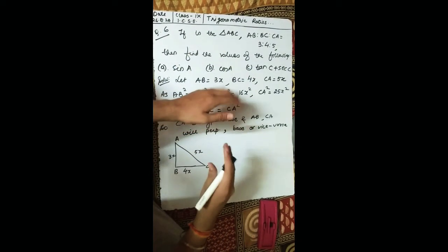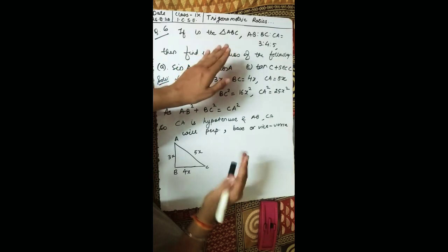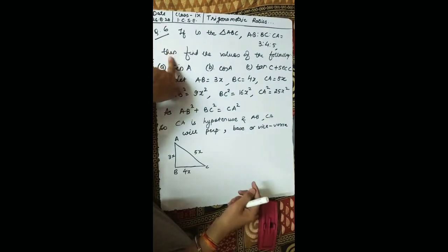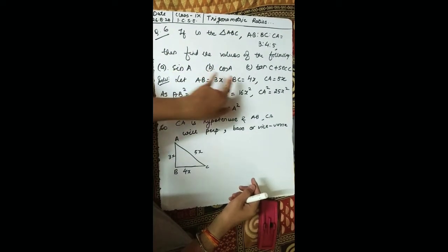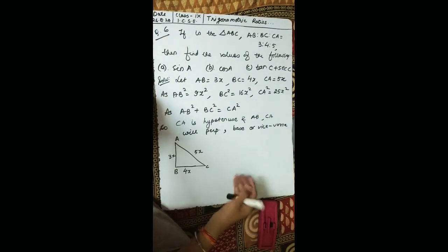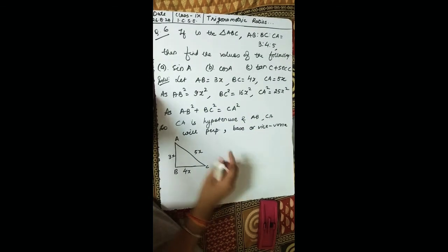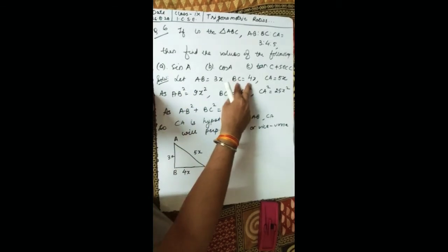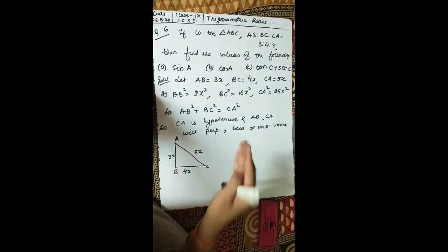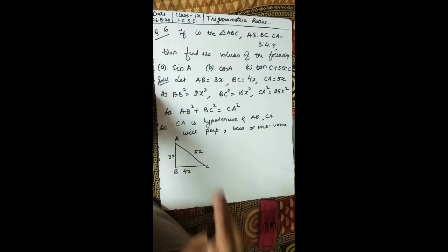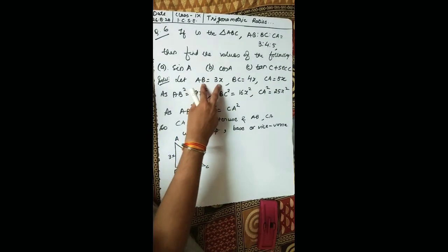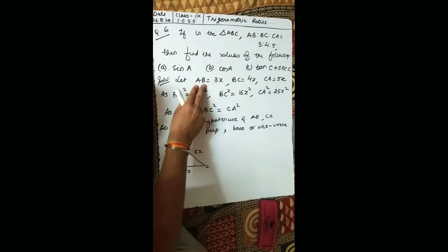We need to find sin A, cos C, tan C plus sec C. Let AB equal 3x, BC equal 4x, and CA equal 5x — we use x because the sides are in ratio and we need a common multiplier. Now squaring both sides: AB squared equals 9x squared, BC squared equals 16x squared, CA squared equals 25x squared.